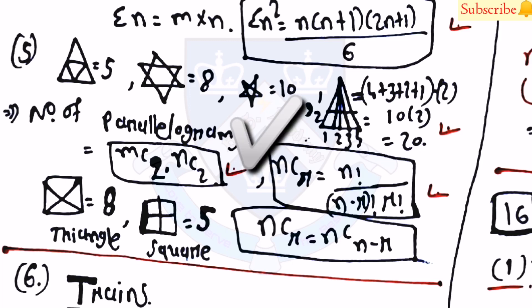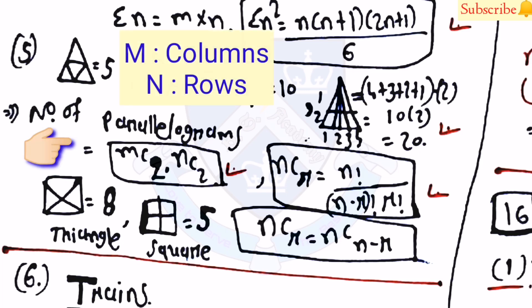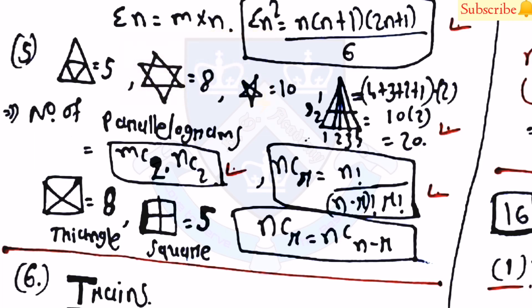For another figure type, 8 triangles are present, and for a certain square arrangement, there are 5 squares. The number of parallelograms = mC2 × nC2, where m = number of columns and n = number of rows. Recall that nCr = n! / ((n−r)! × r!) and nCr = nC(n−r).